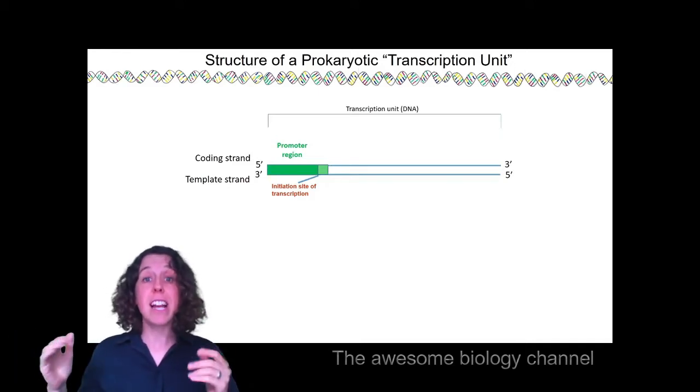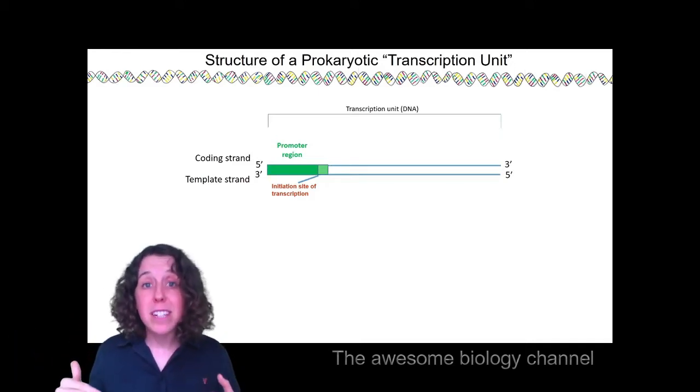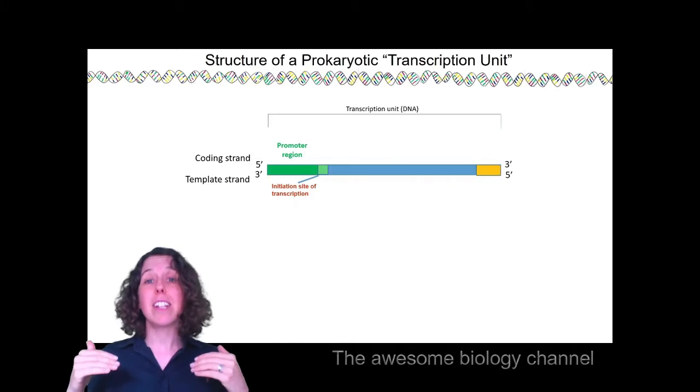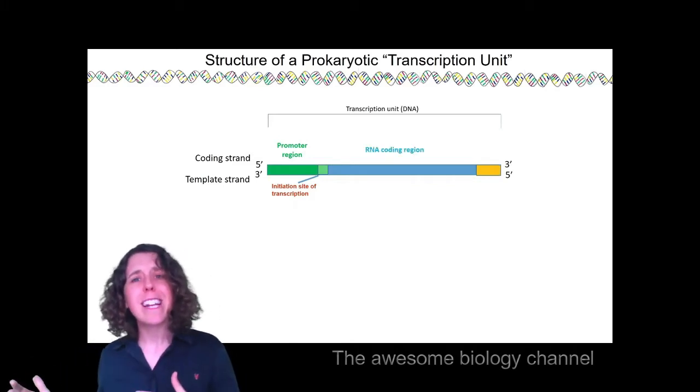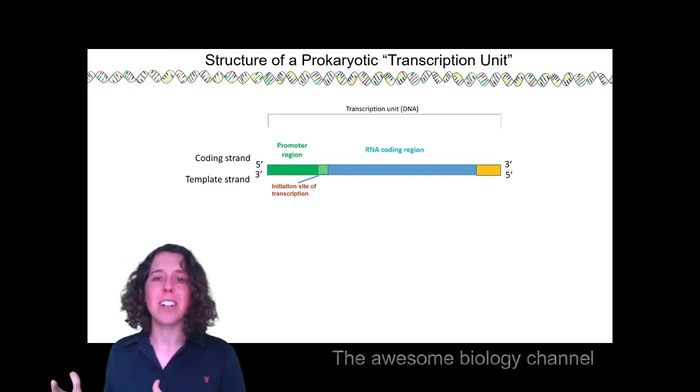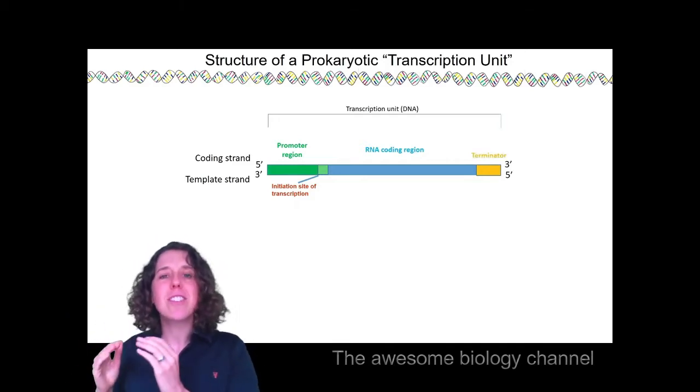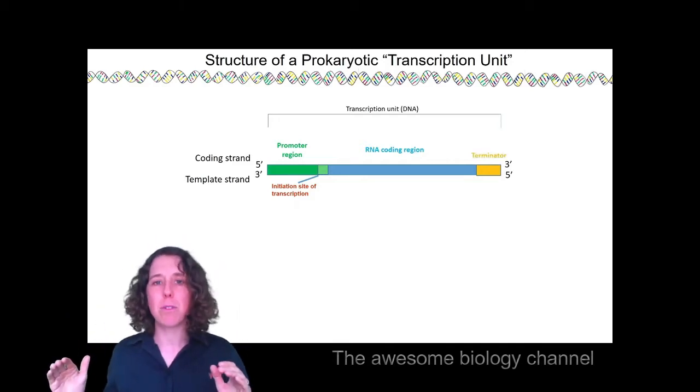Now after the promoter region, there's a stretch of DNA that will end up being transcribed into RNA, that's called the RNA coding region, and right at the end we've got a terminator region, and right at the end of the terminator region, there's a site that will signal the end of transcription.